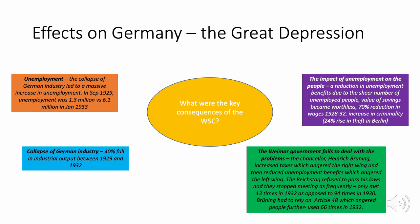German industry failed and collapsed, with a 40% fall in industrial output between 1929 and 1932. The impact on people was devastating: unemployment benefits were reduced because the government could not cope, savings became worthless overnight as the value of money fell, there was a 70% reduction in wages, and there was an increase in criminality — including a 24% rise in theft in Berlin.